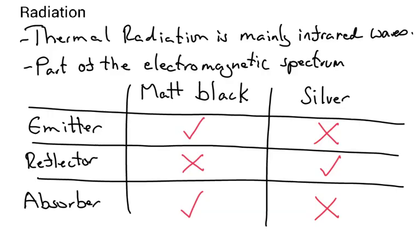Next up we're talking about thermal radiation. So thermal radiation is mainly infrared waves that are part of the electromagnetic spectrum. Now here are some properties of two different coloured materials. If you've got a material that's matte black, they are excellent emitters of thermal radiation, but poor reflectors. They're very good absorbers of thermal radiation as well.